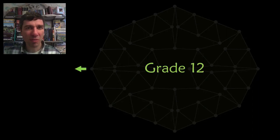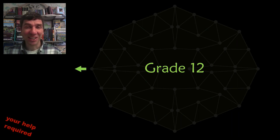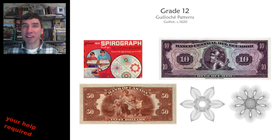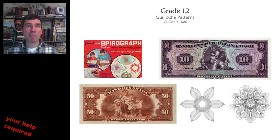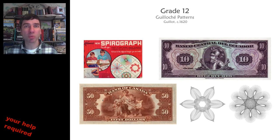The unsolved problem for grade 12 has proven difficult to agree upon. The leading contenders include Guilloché patterns. These are spirograph patterns except instead of having two wheels embedded, Guilloché patterns might have three wheels or more embedded and they are rotated to create these beautiful patterns. You're familiar with them because they appear on paper money as a security measure worldwide.